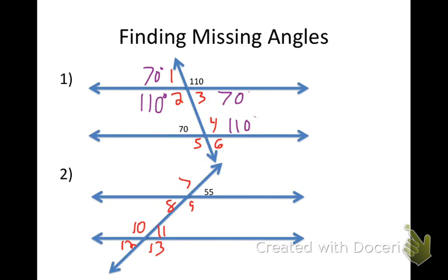What about angle five? I could go with 110. Why? Because it is corresponding to two — two and five are corresponding angles.